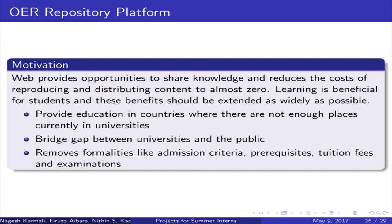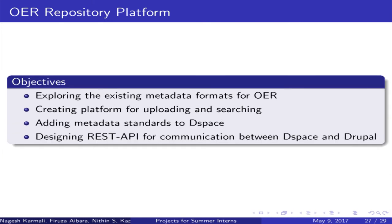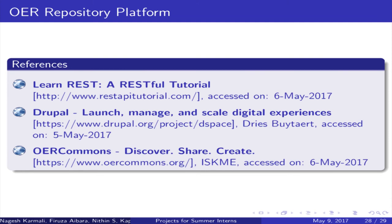The motivation behind the OER repository platform is the motivation behind open education: by improving open access to information and education, you can provide high quality education for everyone, bridge the gap between universities and the general public, and remove formalities like admission criteria. The current objectives are to explore existing metadata formats for open educational resources, create a platform for uploading and searching resources, add metadata standards to the DSpace repository, and design a REST API communication between the DSpace digital repository and the Drupal frontend. These are the references for the OER platform.